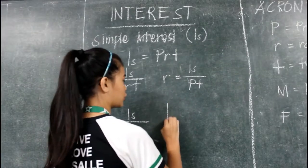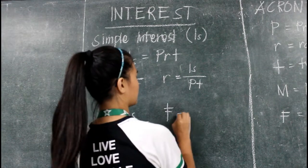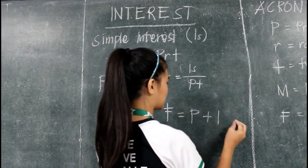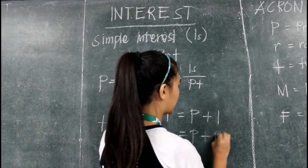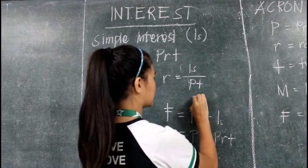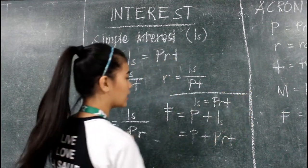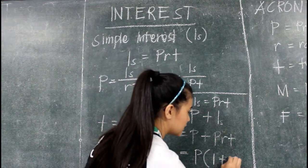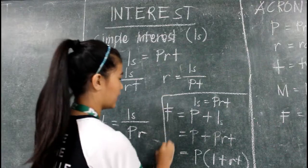Term of the loan T is equal to simple interest over principal times rate. Next, we have the future value. Future value has three formulas: first, P plus interest; next, P plus PRT; and finally, P times 1 plus RT, since simple interest I sub S is equal to PRT.